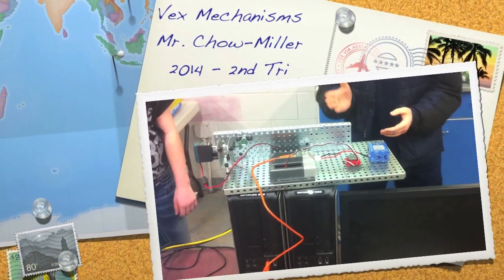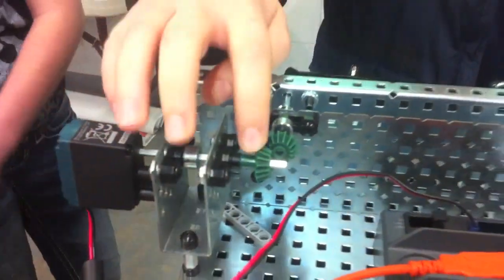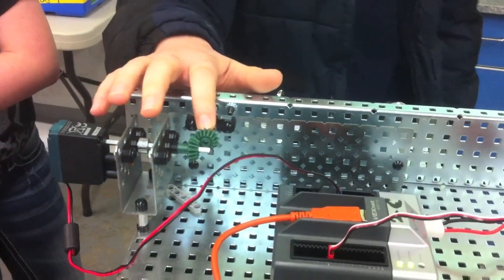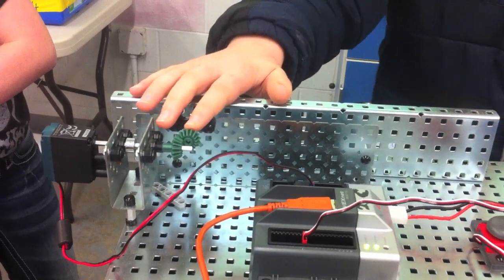This is our mechanism, it's the bevel gear, and the input shaft is the one attached to the motor, right here,